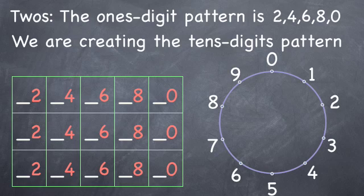Here is our repeating 2, 4, 6, 8, 0 pattern of the ones digits in orange. Now what is the pattern of the tens digits?